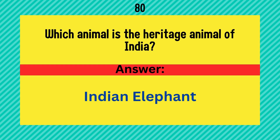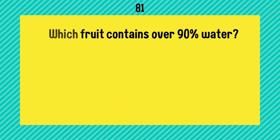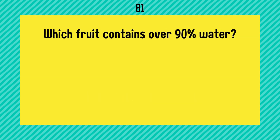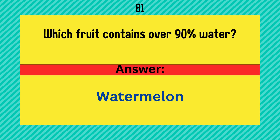Which animal is the heritage animal of India? Answer is Indian elephant. Which fruit contains over 90% water? Answer is watermelon.